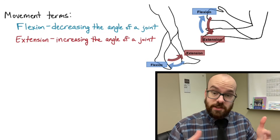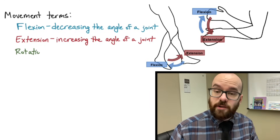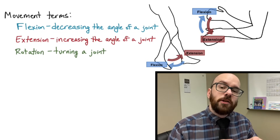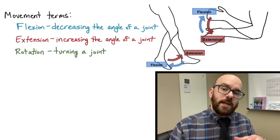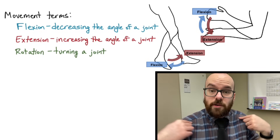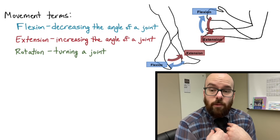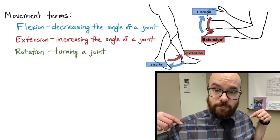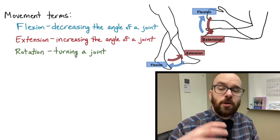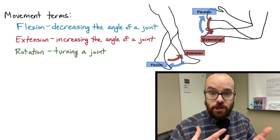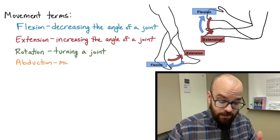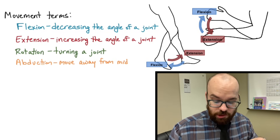Another motion joints can do is rotation — turning a joint. When we talk about rotation we need to indicate a direction, such as rotating the shoulders medially or laterally. We usually pair the word rotation with a directional term to indicate which direction we're rotating that joint.